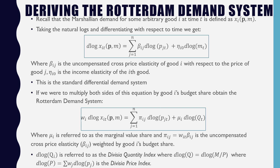In the Rotterdam Demand System we see this d log Q_i term, referred to as the Divisia quantity index, where d log Q is equal to d log income M over this p term, where d log P is equal to the summation of all differentiated log P_j terms — the other price terms — times this W_j weight. This is the Divisia price index, so you have the Divisia quantity index which contains the Divisia price index.